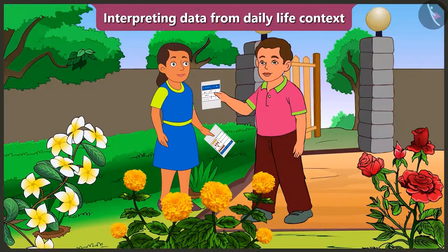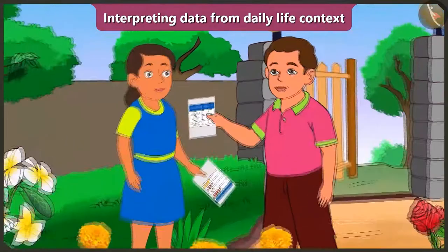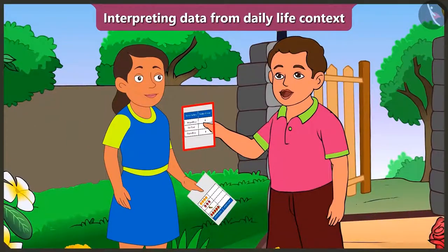But the data about all the blossomed flowers is already filled in this table. That's why you don't need to count the flowers one by one in the garden. Because whatever details are already filled in this table about the flowers, you just need to understand that data.